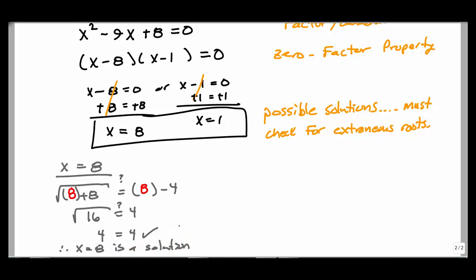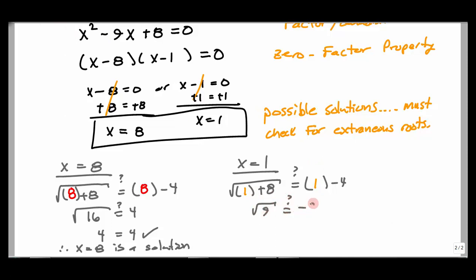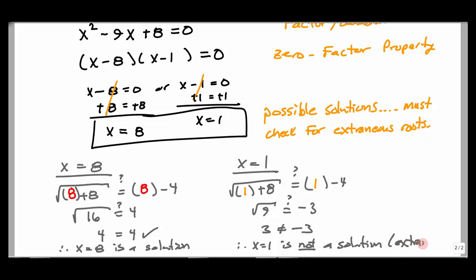Now checking x = 1: plugging 1 into the original gives square root of (1 + 8) = square root of 9 = 3, and 1 − 4 = −3. But I'm looking at the positive root, so the square root of 9 is 3. 3 does not equal −3. Therefore x = 1 is not a solution — it is one of our extraneous roots. I didn't do anything wrong; it's just called an extraneous solution.